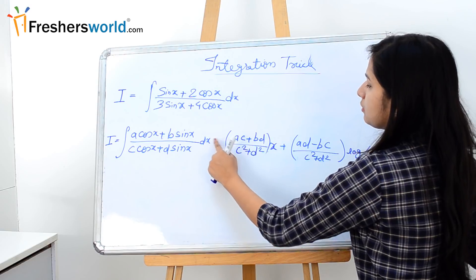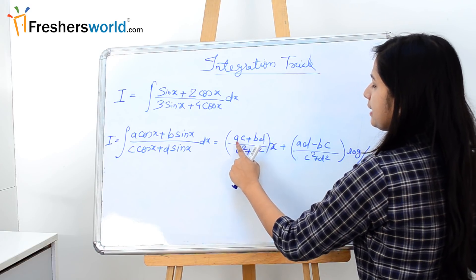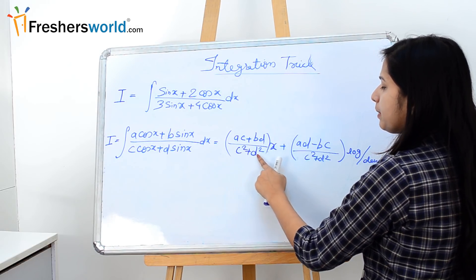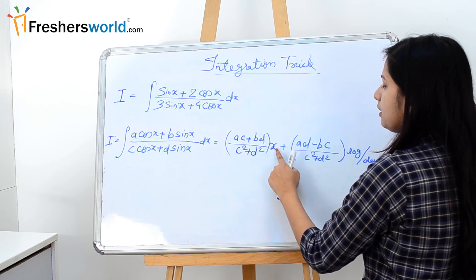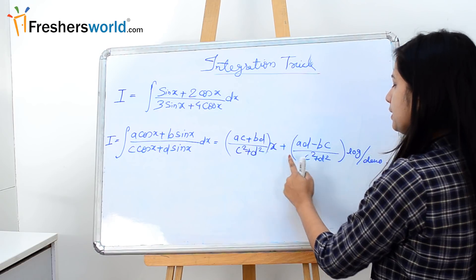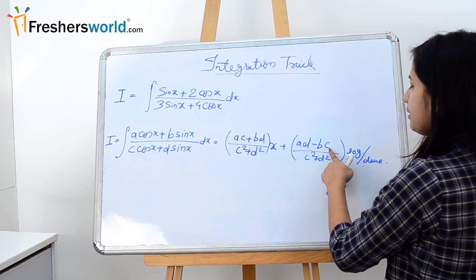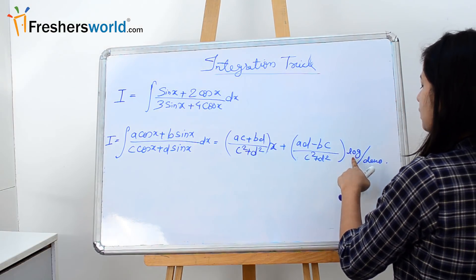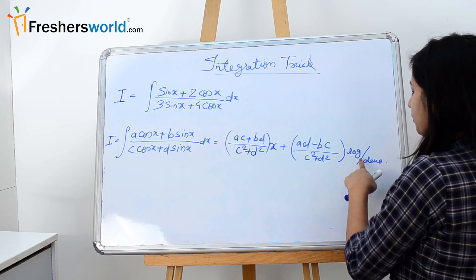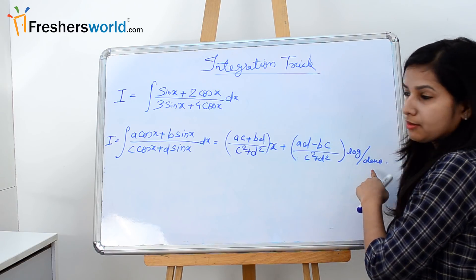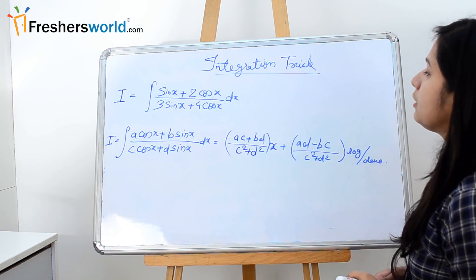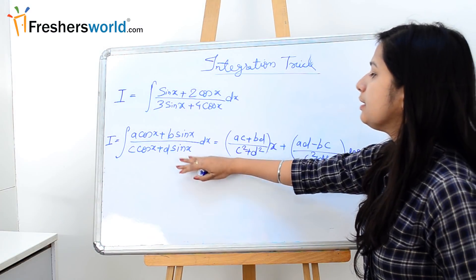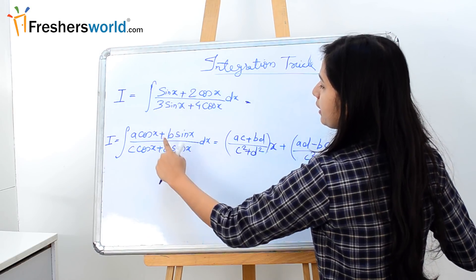The formula is: (ac + bd) / (c² + d²) · x  +  (ad − bc) / (c² + d²) · log(denominator). Now we will rearrange our equation into this format.